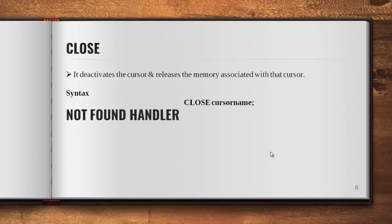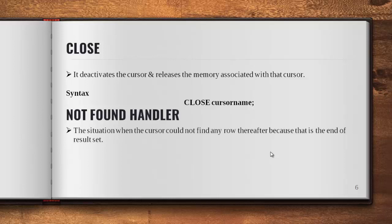There is one more optional keyword: the NOT FOUND handler. The situation where this is needed is when the cursor cannot find any more rows because it has reached the end of the result set. For example, if you have five records in a table, the cursor fetches the first record, displays it, then advances to the second, and so on up to the fifth record.